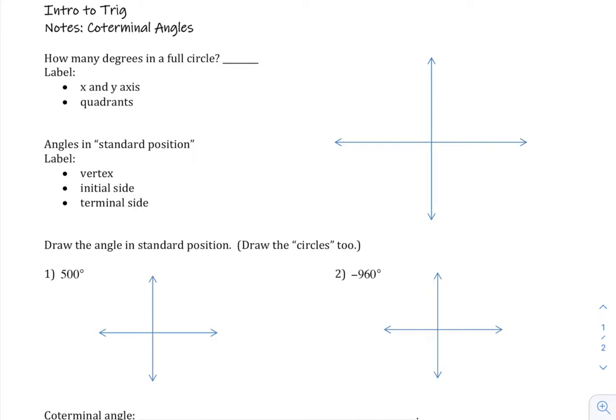How many degrees are there in a full circle? Back in geometry we learned that there's 360 degrees in a full circle, and we're going to be graphing some angles on a coordinate plane. So let's review the quadrants and label our x and y-axis.